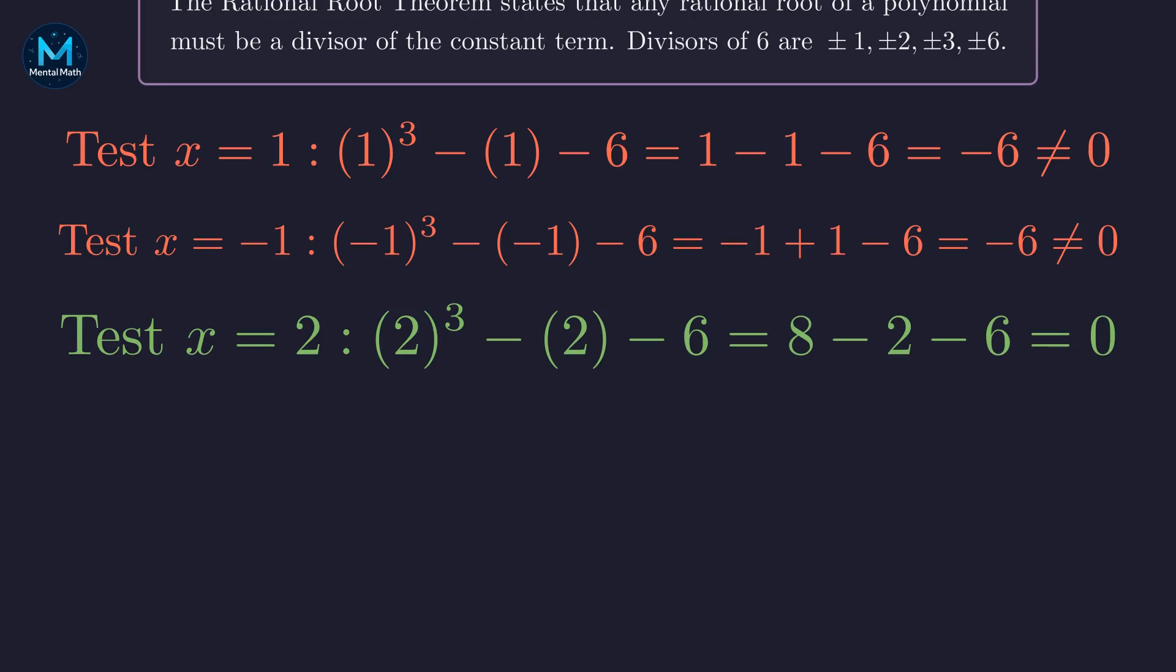Let's try x equals 2. 2 cubed is 8 minus 2 is 6 minus 6 equals 0. Perfect! We found a root.